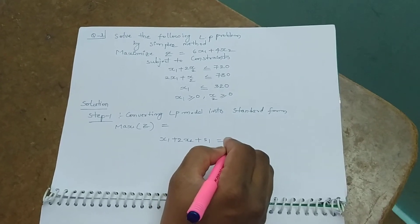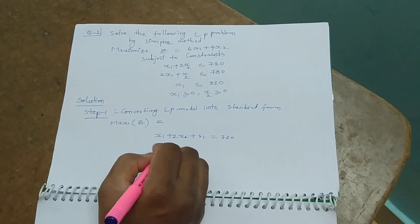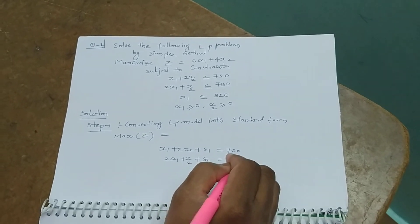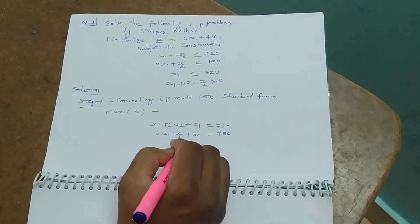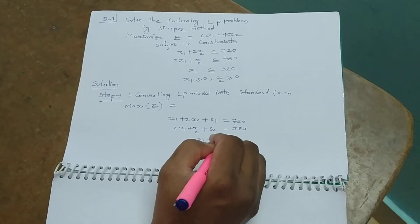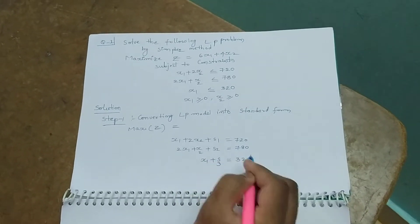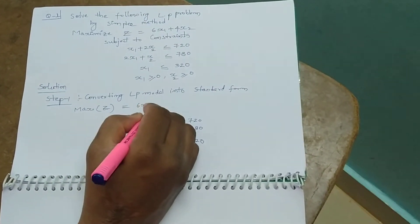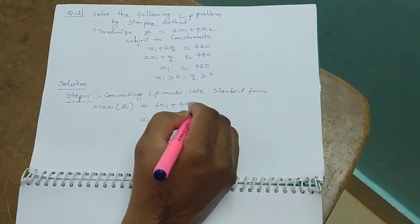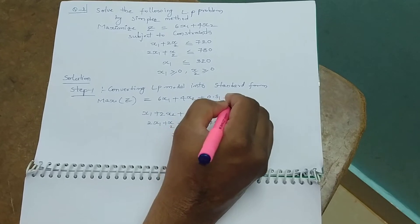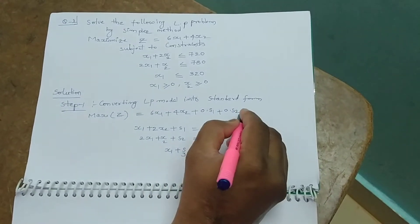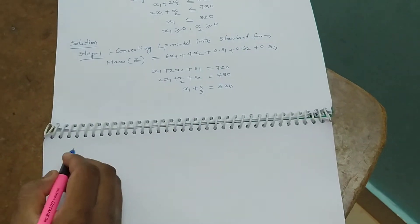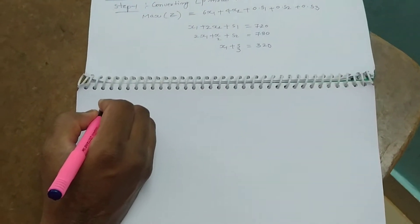The first constraint becomes x1 + 2x2 + s1 = 720. The second constraint is 2x1 + x2 + s2 = 780. The third constraint is x1 + s3 = 320. The coefficients of these slack variables in the objective function are zero, so the objective function becomes: 6x1 + 4x2 + 0·s1 + 0·s2 + 0·s3. This is how we convert the linear programming problem into standard form.